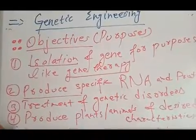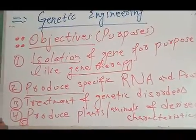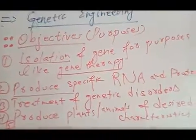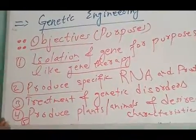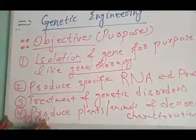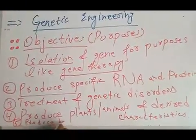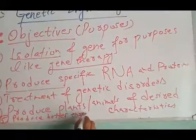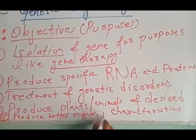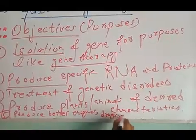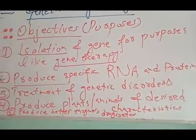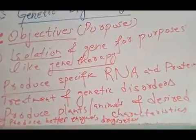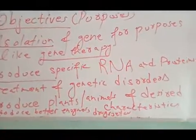The fifth objective of genetic engineering is to produce better enzymes, drugs, and other proteins. Various drugs, enzymes, and proteins are produced in a better way by using genetic engineering.